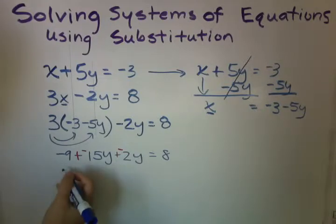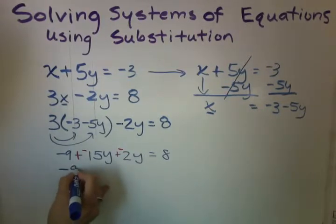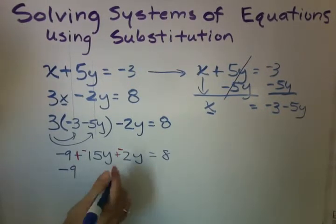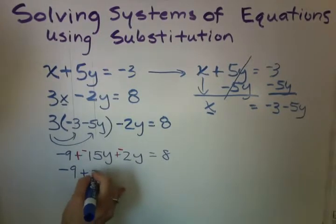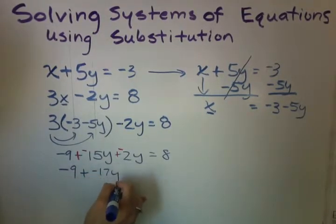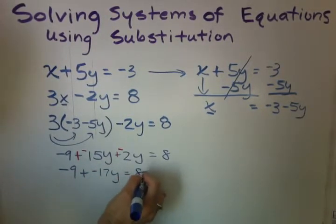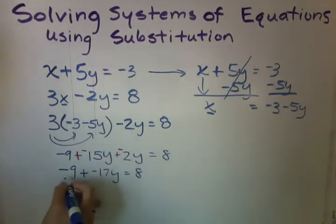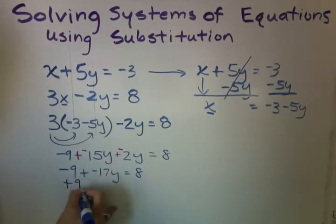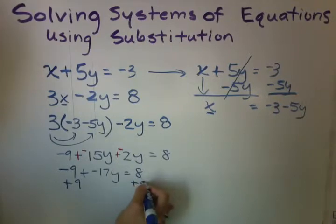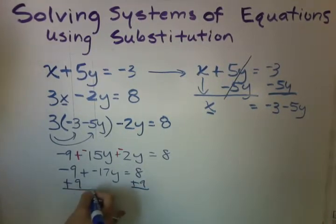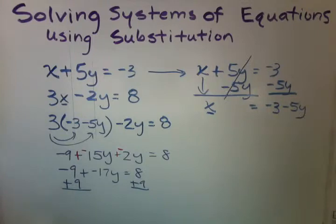So we have negative 9. We're copying like terms. Combining like terms, this is going to be plus negative 17y equals 8. We're going to go ahead and add 9 to both sides because our goal is to get y by itself. This is a two-step equation. If you have any questions on these, you can review my video on solving multi-step equations.